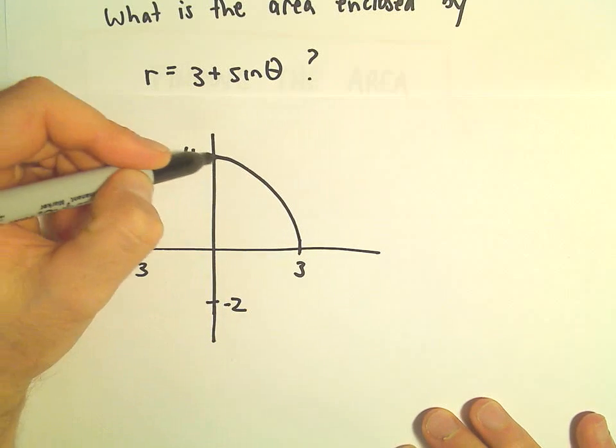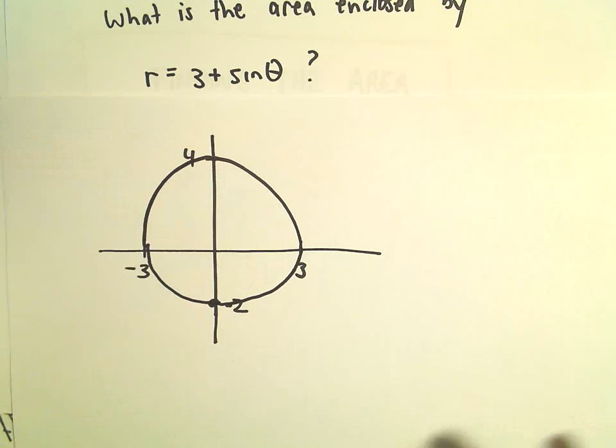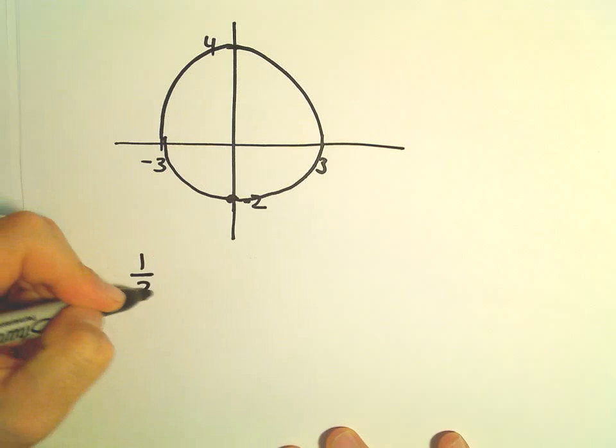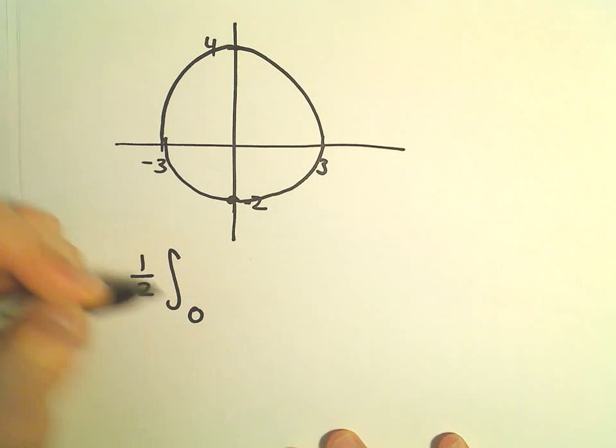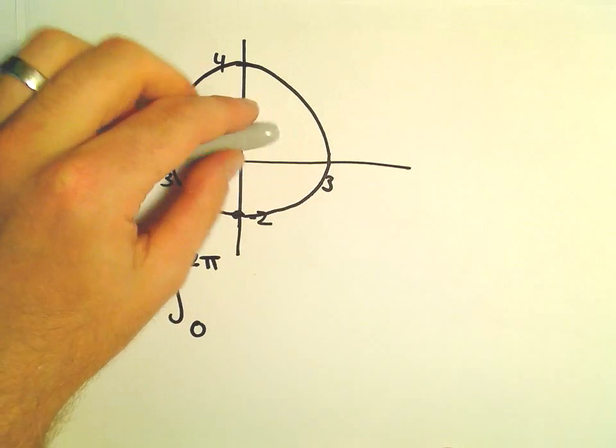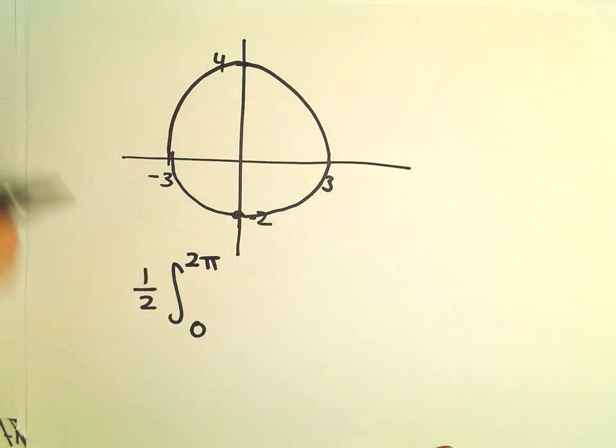All right, so there's our graph. And in this case you don't really need the graph, but just to refresh you. So we would have 1 half the integral from 0 to 2 pi. We do have to go from 0 to 2 pi to trace out this whole object.